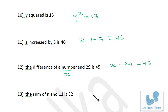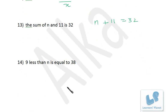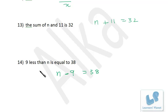The sum of n and 11: n + 11 = 32. Then 9 less than n: n − 9 = 38. Now friends, in all these cases we have connected variables and constants with a single mathematical operation — either addition, subtraction, multiplication, or division.